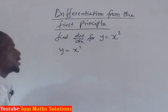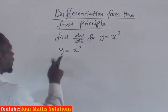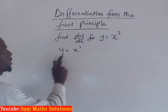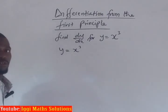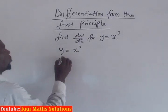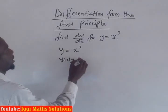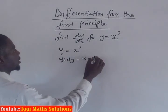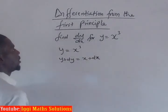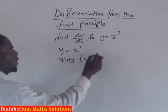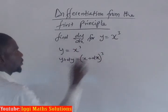So therefore, we are increasing y to dy, and we are increasing x to dx. So we have y plus dy to be equal to x plus dx, and now we have x plus dx cubed. So we are increasing y to the x cubed.